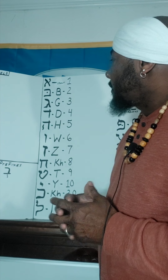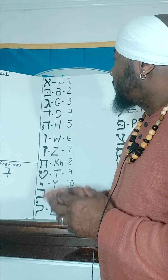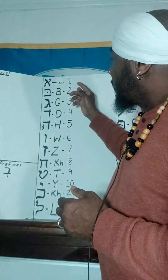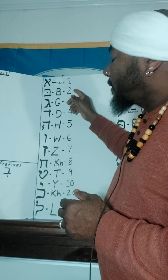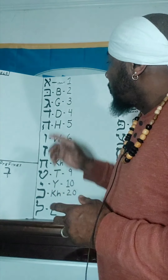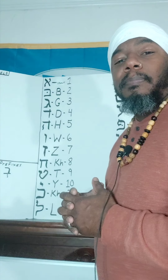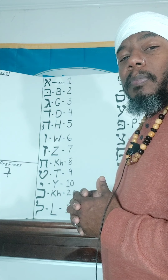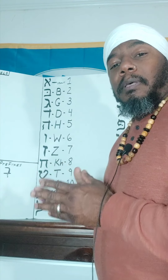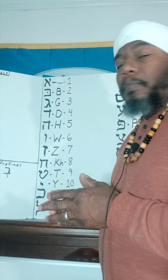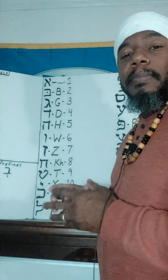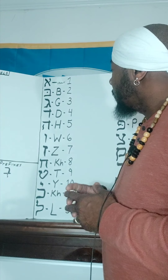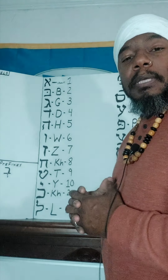The second letter is Bait. The English equivalent is B. The numeral equivalent is two. The third letter is Gamel. The English equivalent is G. And the numeral equivalent is three. The next letter is the Dalet. The English equivalent is the letter D. The numeral value is the number four.